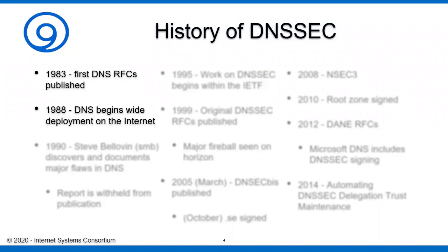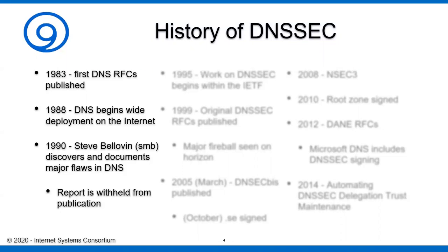Everyone began using DNS, but there were some people doing research. One of them was Steve Bellavin, who wrote a paper in 1990 showing some major flaws both in DNS and in the way DNS was being used for authentication. The most interesting thing about this paper was that it was actually withheld from publication — Steve felt it was a little bit dangerous to make public quite yet, so it was held and released at a later date.